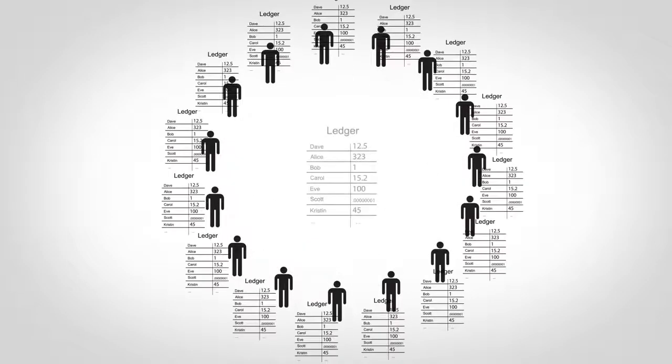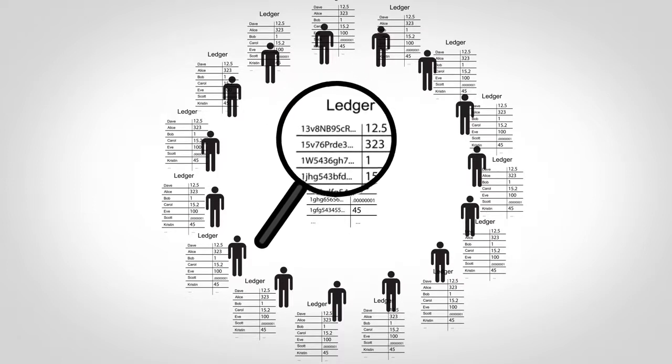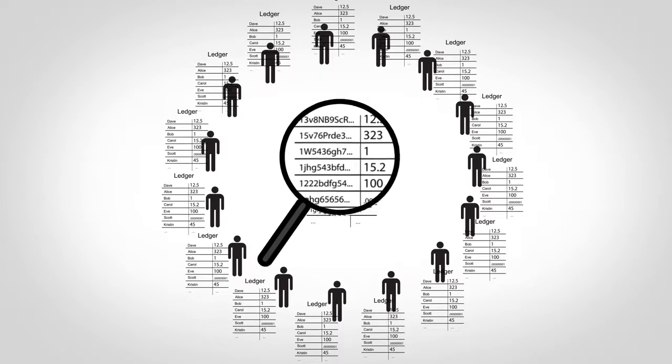One surprising consequence of this is that everyone can see everyone else's balances, although the real system only uses account numbers and not names, so there's some level of anonymity.